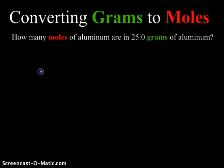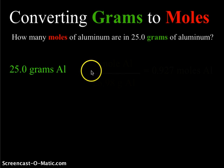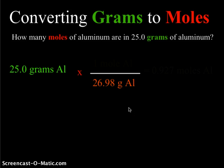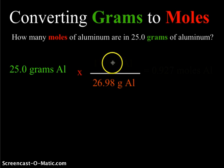I'm going to begin with my starting point of 25 grams of aluminum and multiply by a conversion factor. This conversion factor is going to have the mass of aluminum from the periodic table — 26.98 grams — in the denominator, because we are trying to cancel grams. We know that the gram formula mass, also known as the molar mass, is equal to 1 mole.